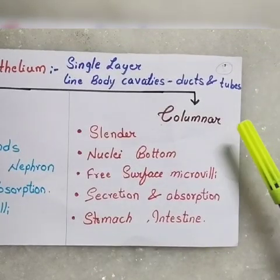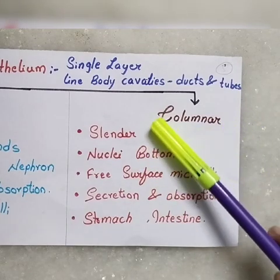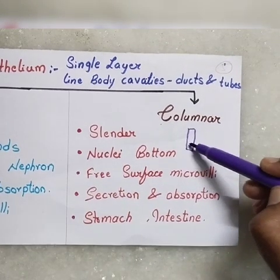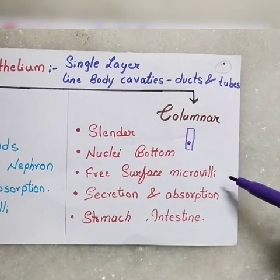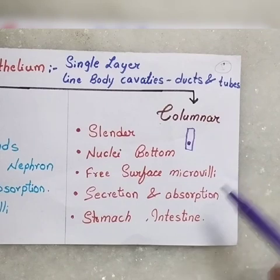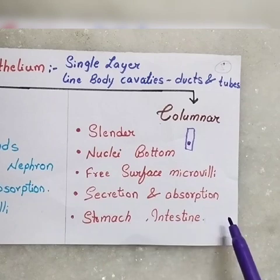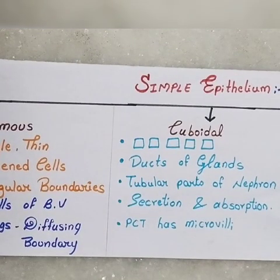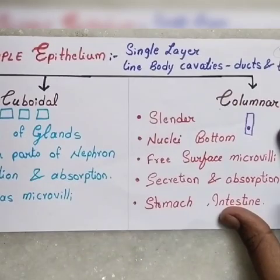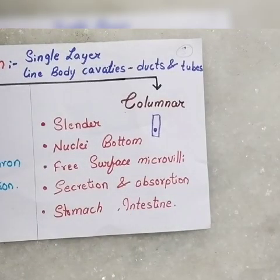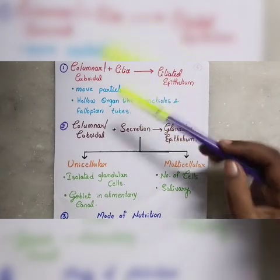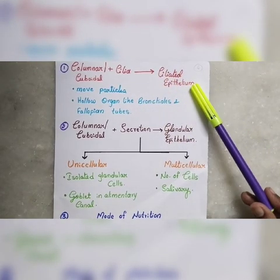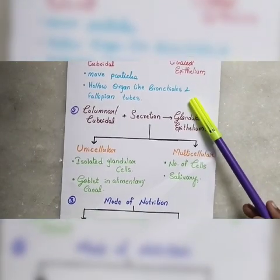Next is columnar epithelium. These cells are slender, and the nucleus is located at the bottom. There is a chance on the free surface. The major function is secretion and absorption. The location is the stomach and intestine. To summarize: squamous epithelium is majorly in blood vessels and lungs for diffusion; cuboidal epithelium is in the nephron; columnar and cuboidal epithelium together serve secretion and absorption.